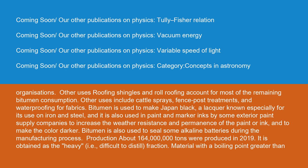Roofing shingles and roll roofing account for most of the remaining bitumen consumption. Other uses include cattle sprays, fence post treatments, and waterproofing for fabrics. Bitumen is used to make Japan black, a lacquer known especially for its use on iron and steel. It is also used in paint and marker inks by some exterior paint supply companies to increase weather resistance and permanence, and to make the color darker. Bitumen is also used to seal some alkaline batteries during the manufacturing process.